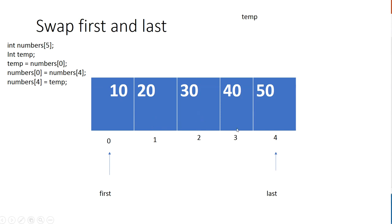First, we have a 'first' pointer that points to the first element, and a 'last' pointer that points to the last element. We're going to increment 'first' by one every time we're done swapping, and decrement 'last' by one when we're done swapping.